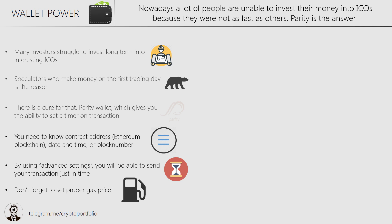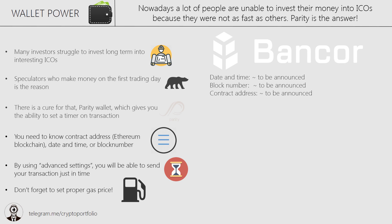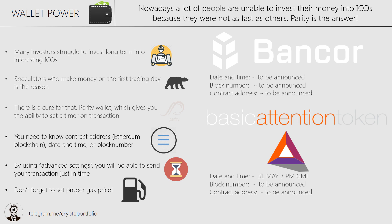For example, the Banker Network will have its ICO at the end of May, though at the moment there is no information about the dates or contract address. Another ICO which will be extremely popular is the Basic Attention Token, with its ICO on the 31st of May. There is no contract address yet, but subscribe to their blog to be the first to know the contract address and the exact block number that will start the crowdsale. Don't forget to set the proper amount of gas, the amount you want to invest, and double-check the contract address the team has provided.